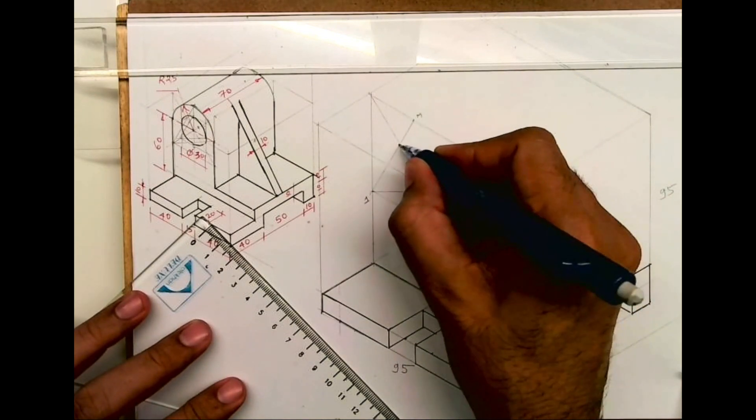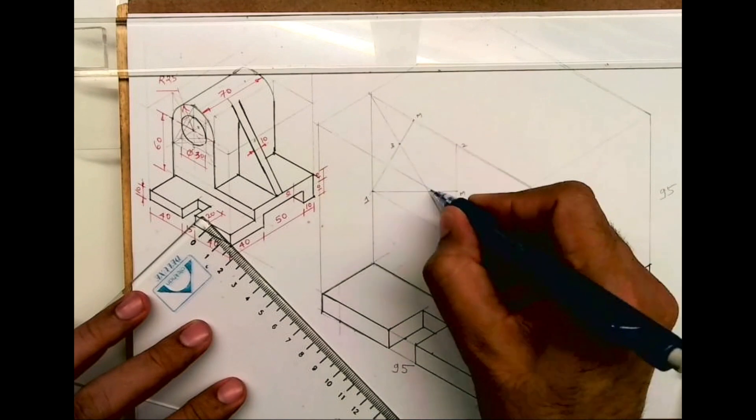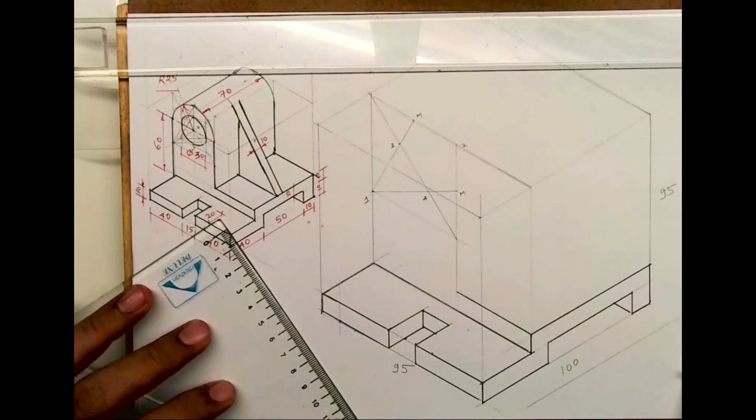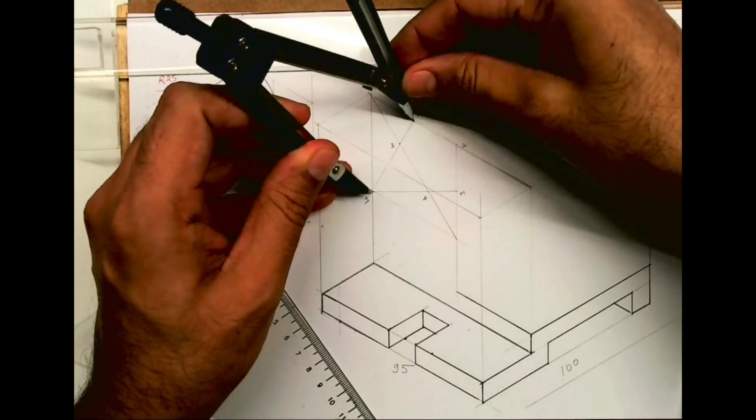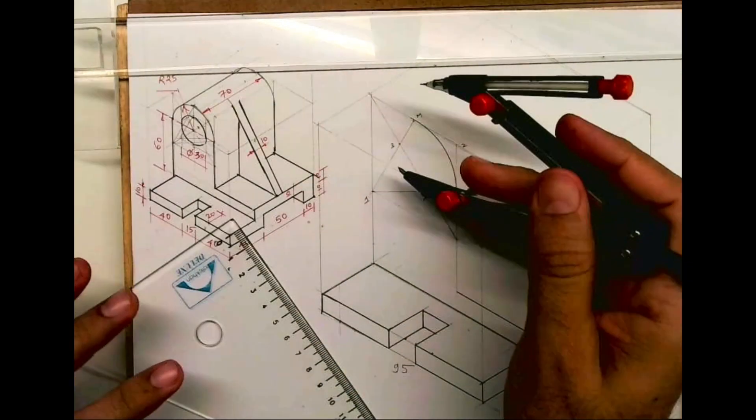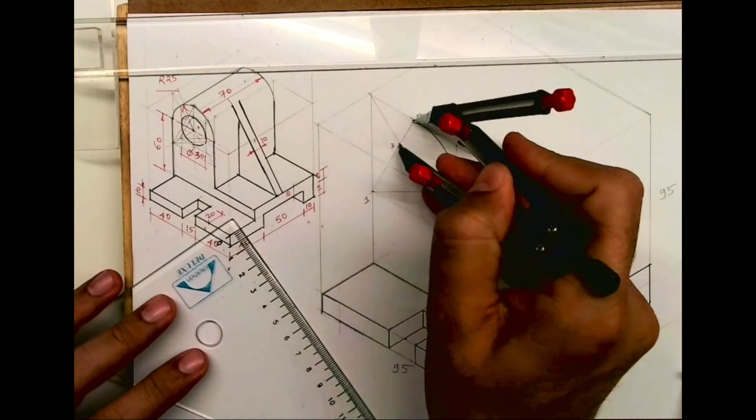This is second point, this is third, and this is fourth point. So from one to M we can take radius and we can draw R. Then we can take three to M and we can draw radius.